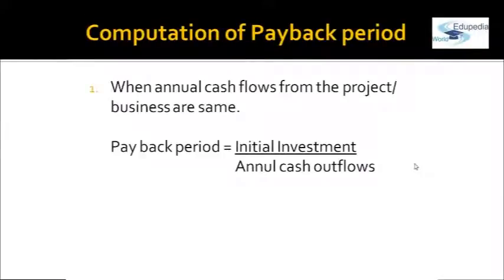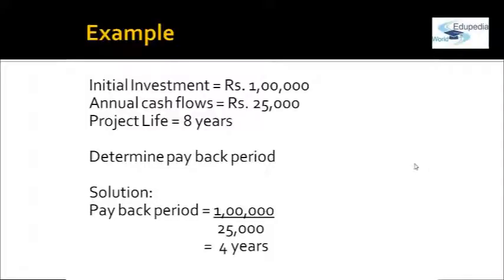To compute the payback period: it is simply the initial investment divided by the annual cash inflow. In our example, 1,00,000 ÷ 20,000 = 5 years. If initial investment is 1,00,000 and annual cash flows are 25,000, then payback period = 1,00,000 ÷ 25,000 = 4 years. After 4 years, you have fully recovered your outflow and the remaining years generate pure income.